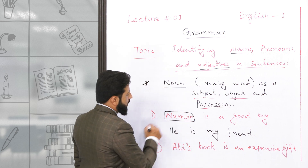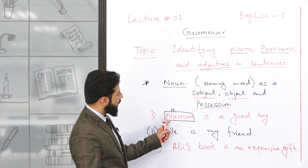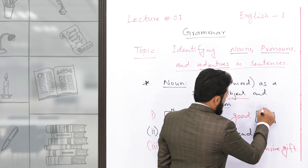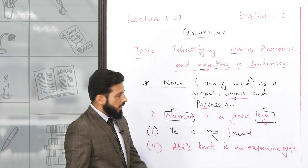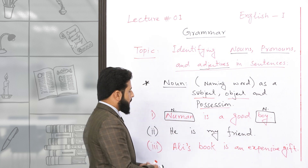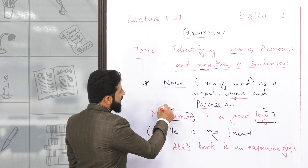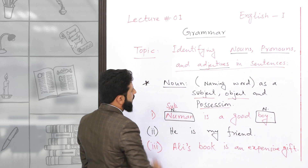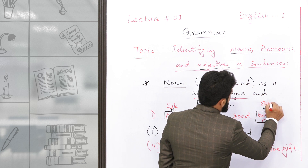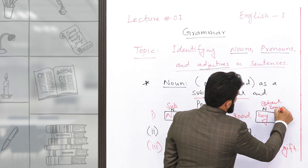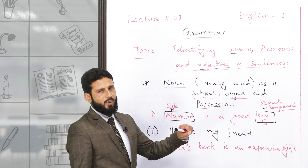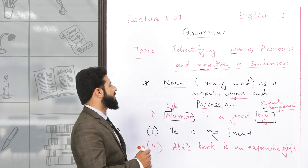اس sentence میں 'No man' ایک noun ہے اور 'boy' بھی ایک noun ہے۔ یہ دونوں ایک دوسرے سے linked ہیں۔ یہاں پر 'No man' subject of the sentence کے طور پر استعمال ہوا ہے اور 'boy' subject complement ہے — یعنی اس subject کو complete کرتا ہے۔